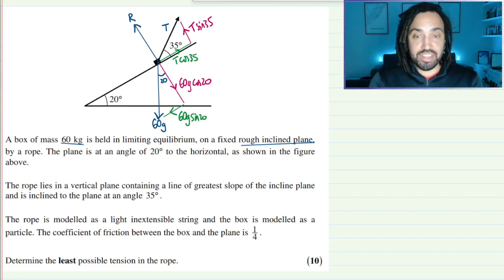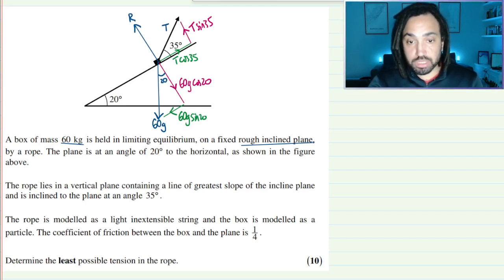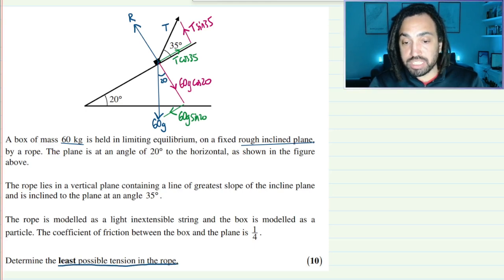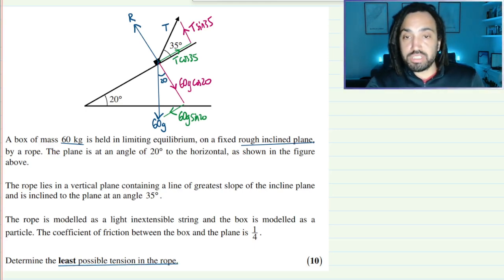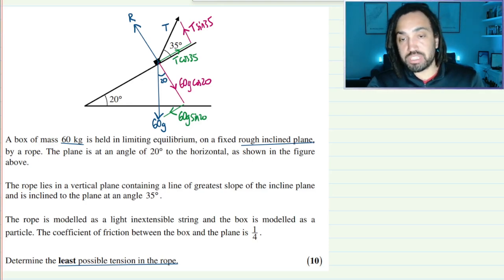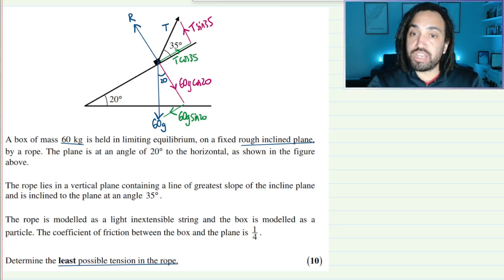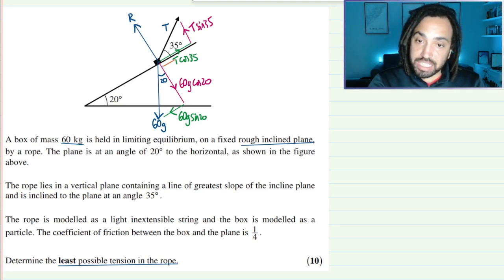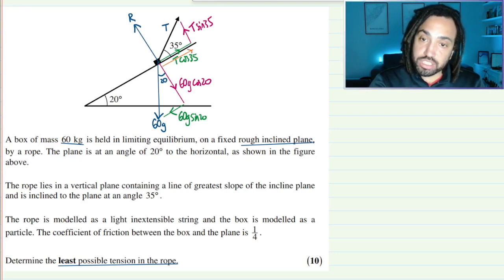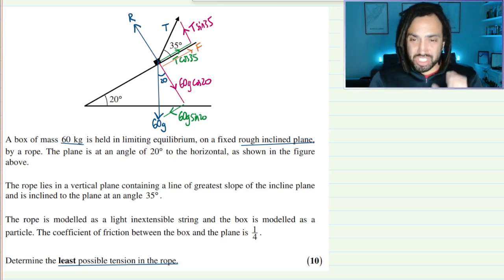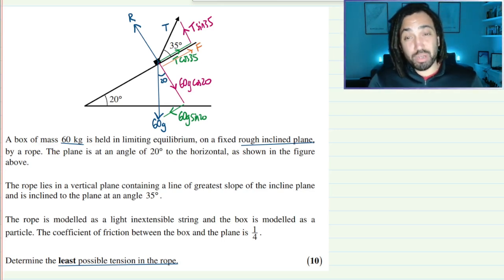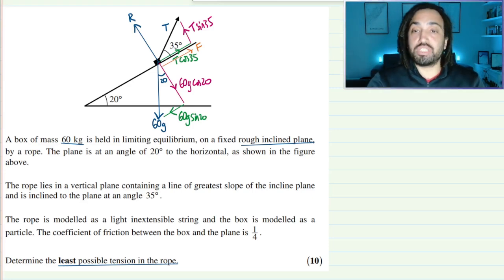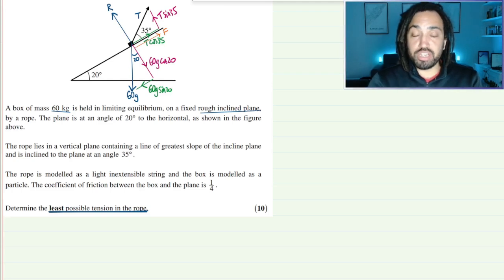Where is friction acting? That is dependent on whether or not this object is going to slip down the slope or if it's going to start to slip up the slope. Well we don't quite know that at the moment but it does say determine the least possible tension in the rope. So we want tension to be working as little as possible which means we need the support from the friction. Therefore friction is going to be acting up the slope like so. Because it's just about to slip down so friction is always going to oppose the motion so it's going to push it up as much as it possibly can. Diagram is done, it's looking good.